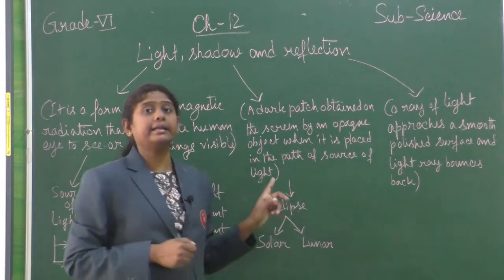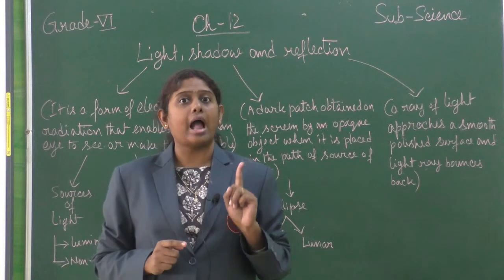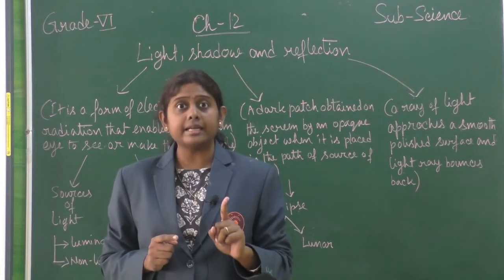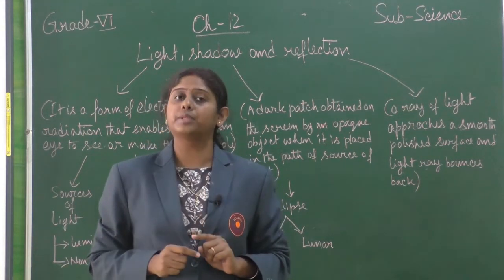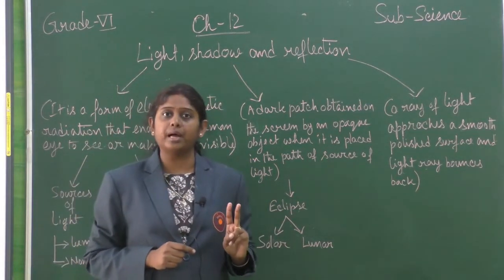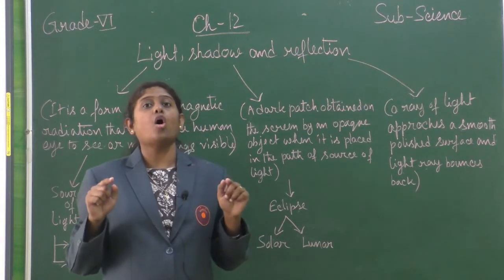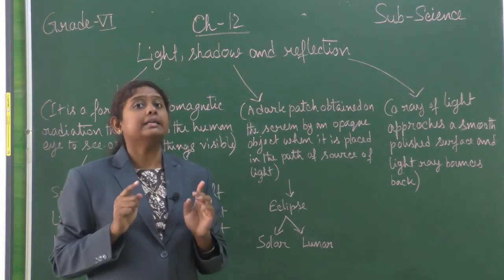Depending on the nature of shadow, we can divide a shadow into two parts. First part is umbra, which is the darkest central part of the shadow. Second one is penumbra, which is the side layer of umbra and this is the faint color of the shadow.